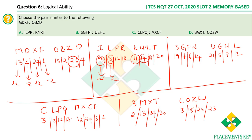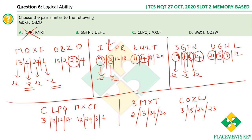Since option A fails (even-position numbers also increase by 2 instead of decreasing), let's check option B: 19 and 21 is plus 2, then 7 and 5 is minus 2, then 6 and 8 is plus 2, then 14 and 12 is minus 2. This matches the plus 2, minus 2, plus 2, minus 2 pattern perfectly. Therefore option B is the right answer.